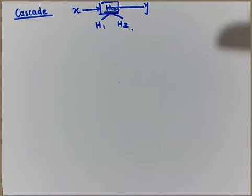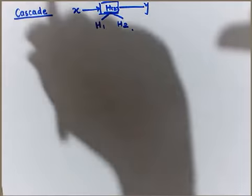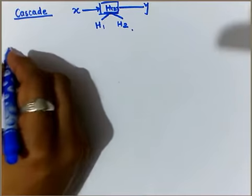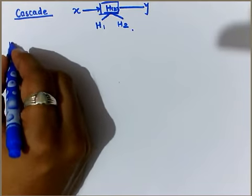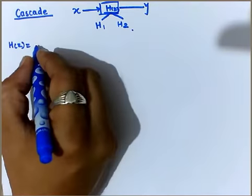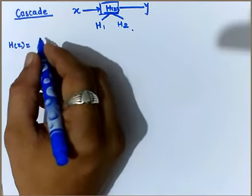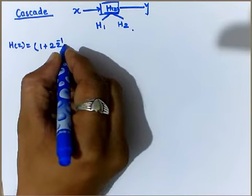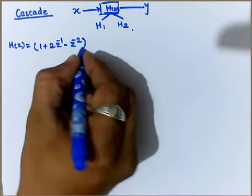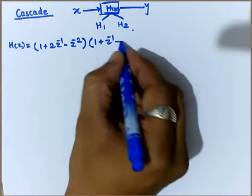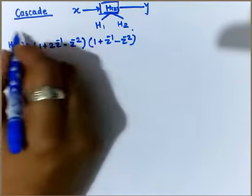We are rewriting it either in direct form realization or direct form 2. The same technique is used here, only the format of h of z is changed. It is non-recursive type. So h of z will be, for example, (1 + 2z^-1 - z^-2)(1 + z^-1 - z^-2).